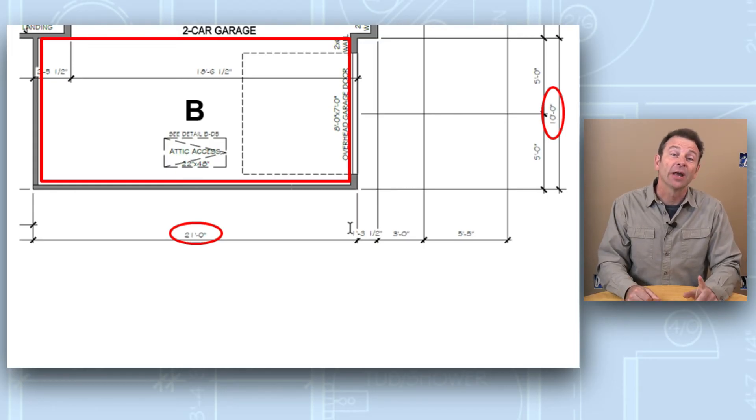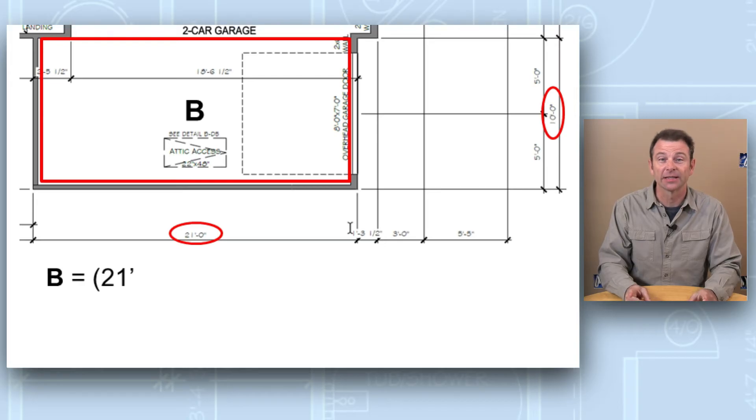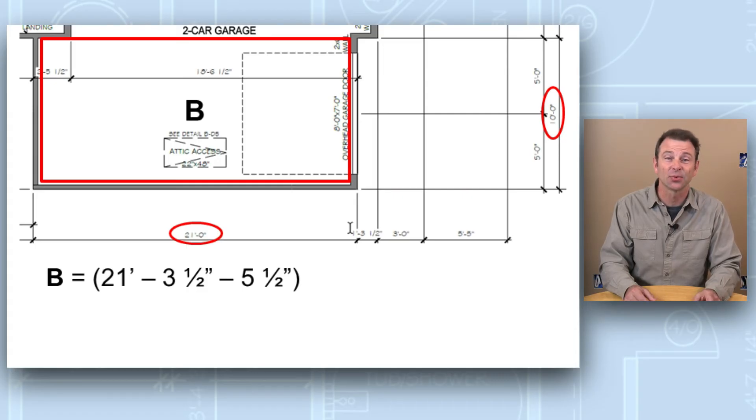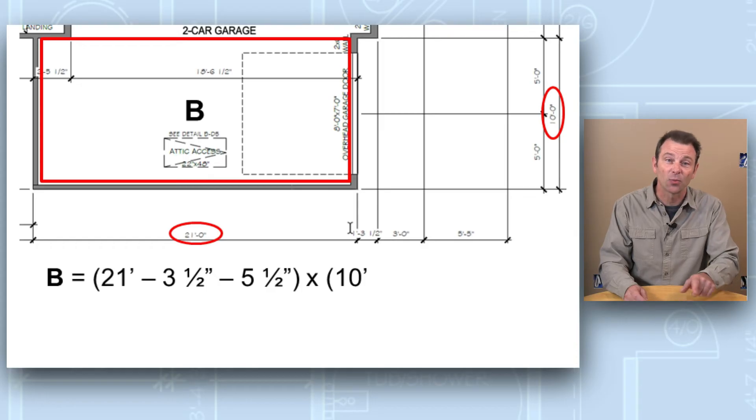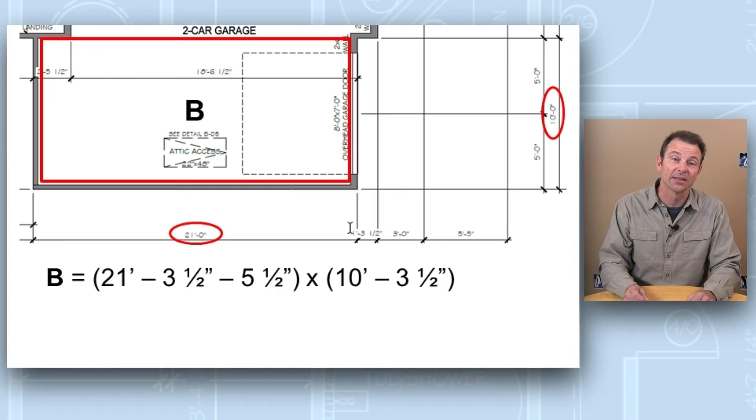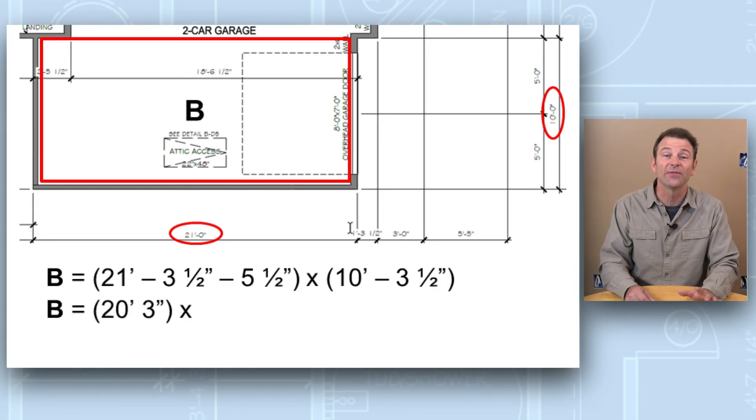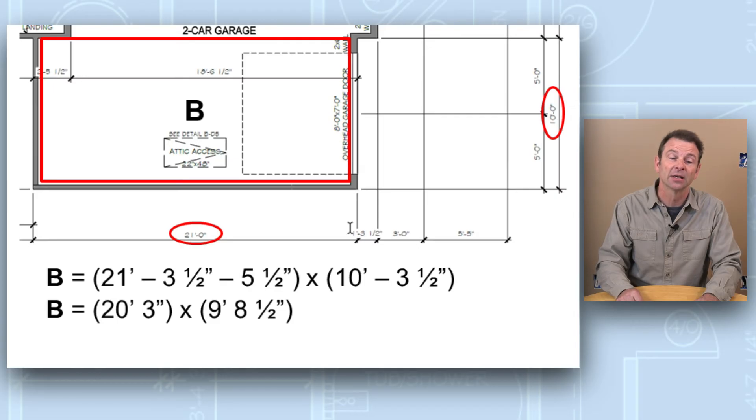Now we need to solve for part B. We have length times width and our length here is called out as 21 feet. If you look closely at this measurement, the dimension lines reach to the outside of the left wall and the right wall. So we need to subtract the thickness of these two walls from our overall dimension. That's going to be three and a half inches on one side, two by four wall, and then five and a half inches on the other side, a two by six wall. That sets up our length to be 21 feet minus three and a half inches minus five and a half inches. On our width of our wall, that's called out as 10 feet, but we need to subtract the south wall thickness, which is three and a half inches. So that's going to be 10 feet minus three and a half inches. So we're going to put that into our equation, then we can solve for it. So 21 feet minus three and a half inches minus five and a half inches is going to be 20 feet, three inches. And we can multiply that times our 10 feet minus three and a half inches, which is going to be nine feet, eight and a half inches. So these two numbers multiplied together are going to give us our square footage of 196.59.